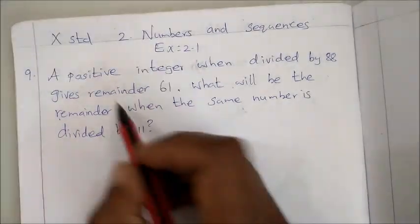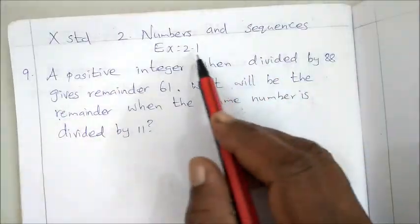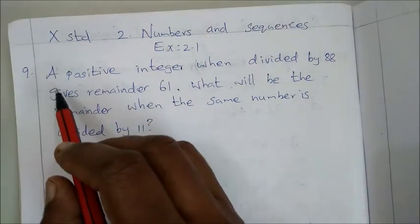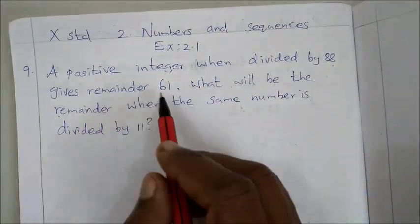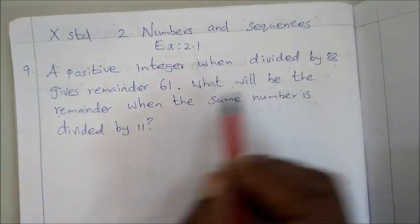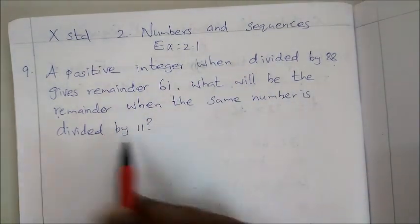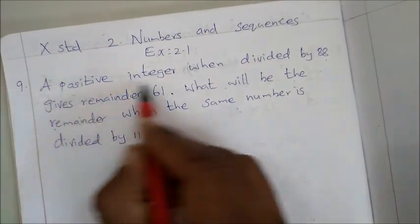This is 10th standard, second unit, numbers and sequences, exercise 2.1, problem 9. A positive integer when divided by 88 gives remainder 61. What will be the remainder when the same number is divided by 11? Okay, so positive integer...